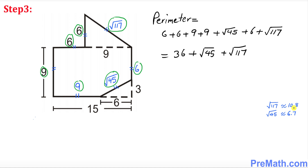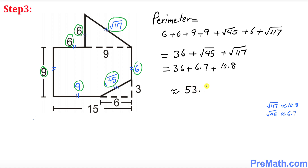We know that √117 is approximately 10.8 and √45 is approximately 6.7. Plugging those in: 36 + 6.7 + 10.8. Adding it all up, our perimeter is approximately equal to 53.5 units. That is our answer. Thanks for watching, and please subscribe to my channel for more exciting videos.